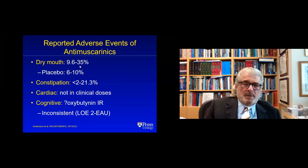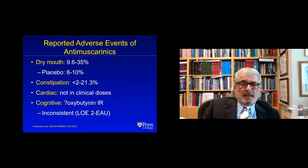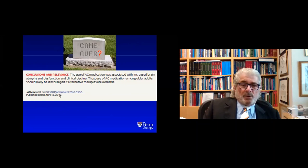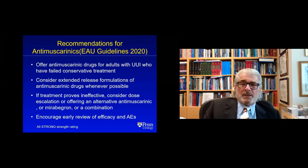The adverse events of anti-muscarinics you're all familiar with. There was a scare about cardiac effects a few years ago — in clinical doses that we use anti-muscarinics, that doesn't happen. Cognitively, though, now everyone pretty much agrees anti-muscarinics have the capacity to cause cognitive dysfunction. A 2016 article in JAMA Neurology concluded that use of anticholinergic medication was associated with increased brain atrophy, dysfunction, and clinical decline — its use among older adults should likely be discouraged if alternative therapies are available.